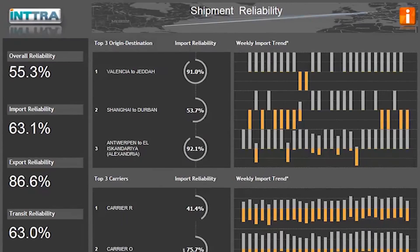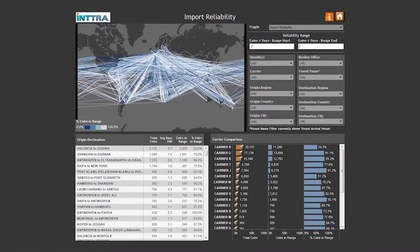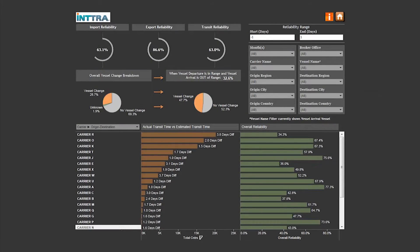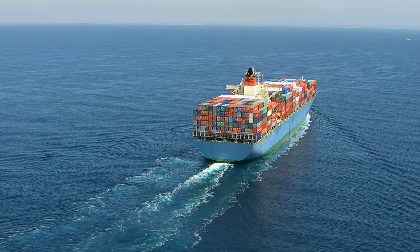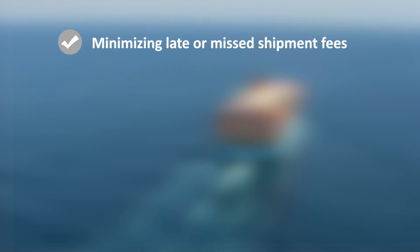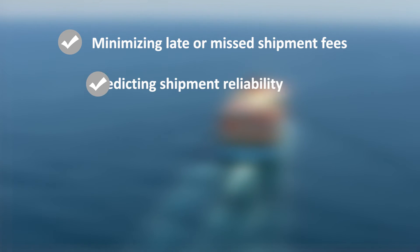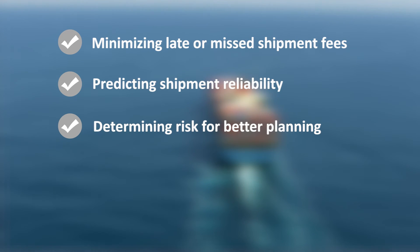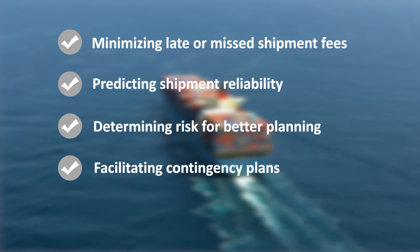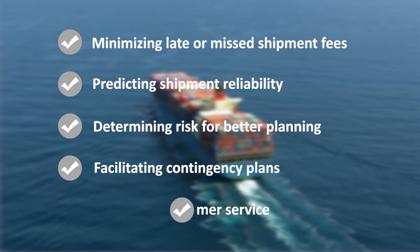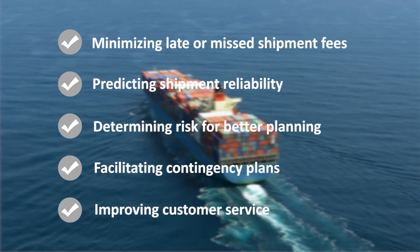Make this new thoughtfully designed shipment reliability dashboard from Intra part of your critical decision-making tools. The benefits of this important tool include minimizing fees due to missed or late shipments, predicting shipment reliability by trade lane based on detailed historical data, determining the risk for meeting cutoff dates to better plan shipments, facilitating contingency plans for higher risk trade lanes, and improving customer service with better inventory planning.